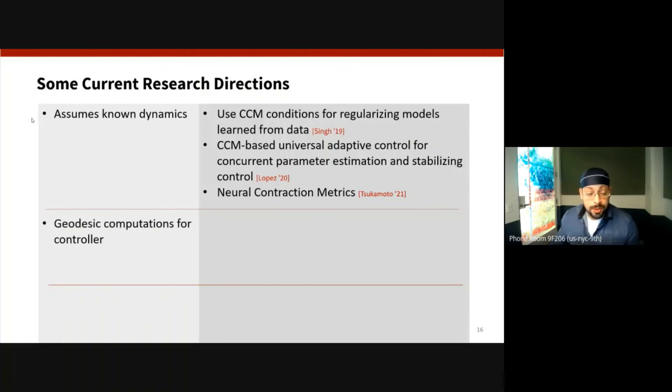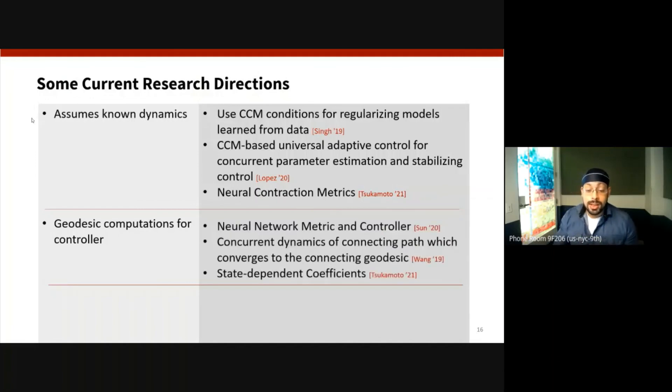The second limitation comes from the fact that the controller needs to compute the geodesic, the minimizing geodesic, between the desired state and the actual state at every point in time. And this in general can be a more complicated computation as the state space dimensionality increases. So some of the ways that this has been tackled is by replacing the metric and the controller using neural networks. Another technique is to simultaneously solve for the connecting path between the desired trajectory and the actual trajectory, where this path converges to the minimizing geodesic, and then by using a specific form for the dynamics representations which allows you to actually compute the feedback controller in closed form.